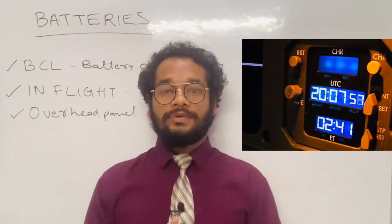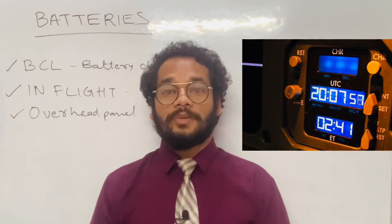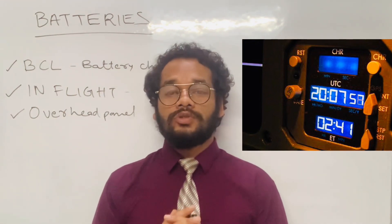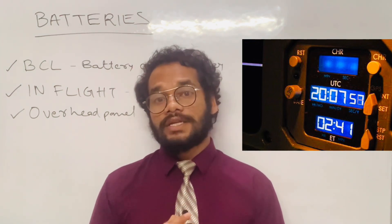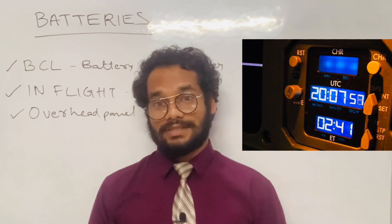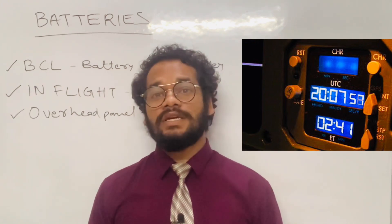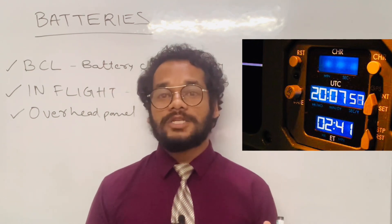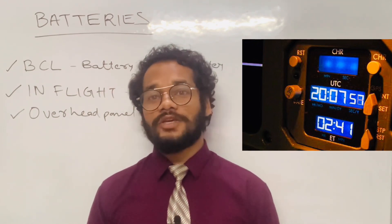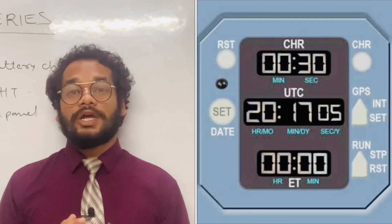The clock on the center-right main instrument panel also gets its DC voltage from the batteries via the hot bus. The clock sends time signals to the FMGC (Flight Management Guidance Computer), CFDIU (Central Fault Data Interface Unit), and FDIU (Flight Data Interface Unit).